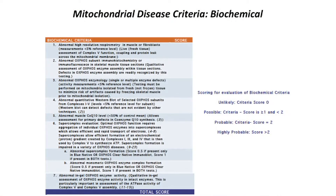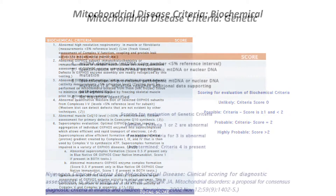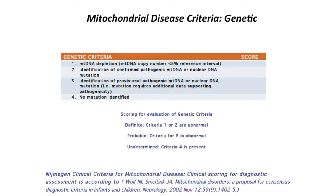Here's a list of the biochemical criteria, and most of these are done on samples of muscle or skin. Then there are genetic criteria also, and these encompass both mitochondrial DNA — which is the genetic material in mitochondria — as well as nuclear genes, so genes in the nucleus of the cell, because both are very involved in mitochondrial function.